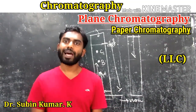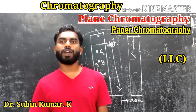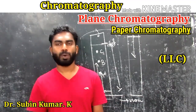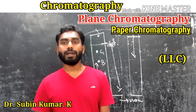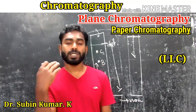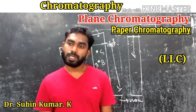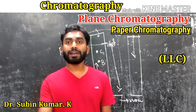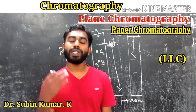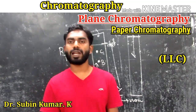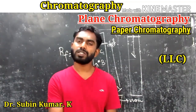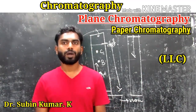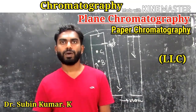Several other techniques are available for locating the spots. Iodine solution is a suitable developer for colorless reagents. Other coloring reagents are also used for paper chromatography.